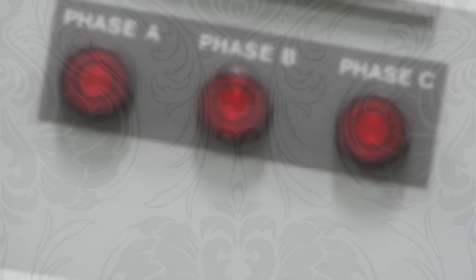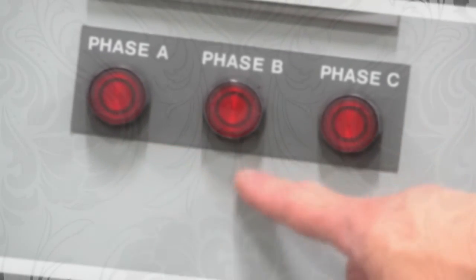Normally, when a ground fault occurs on an ungrounded system, a delta-delta system, for example, if you don't have high-resistance grounding by National Electric Code, you have to have three indicating lights: Phase A, Phase B, Phase C.